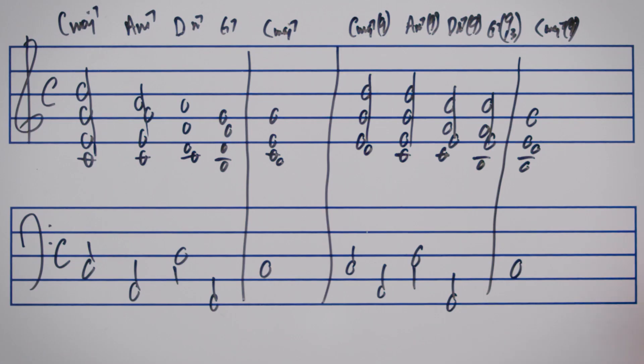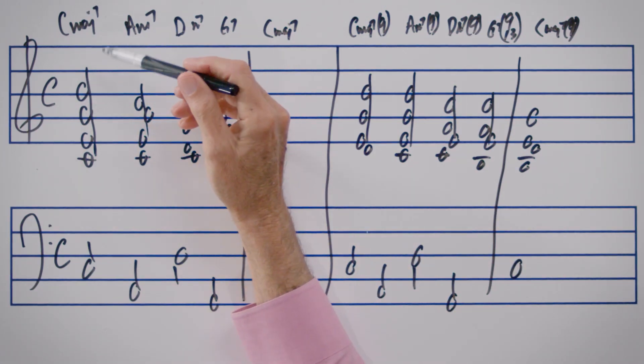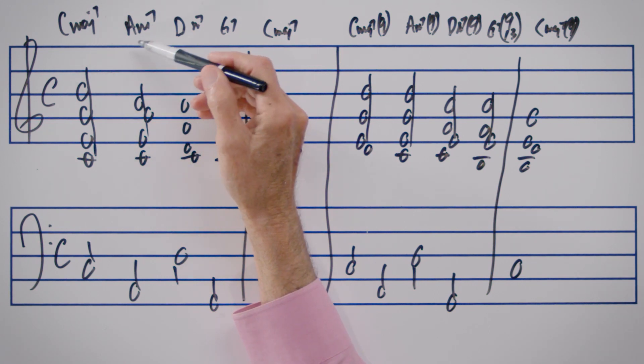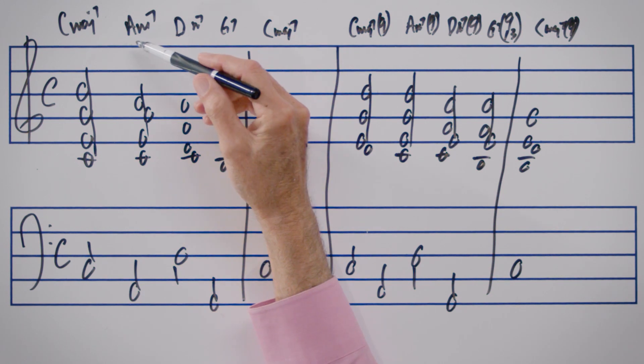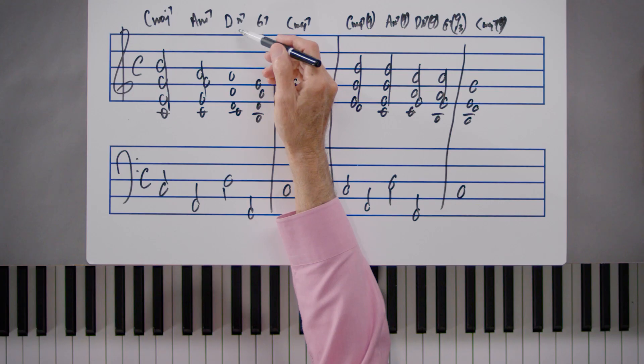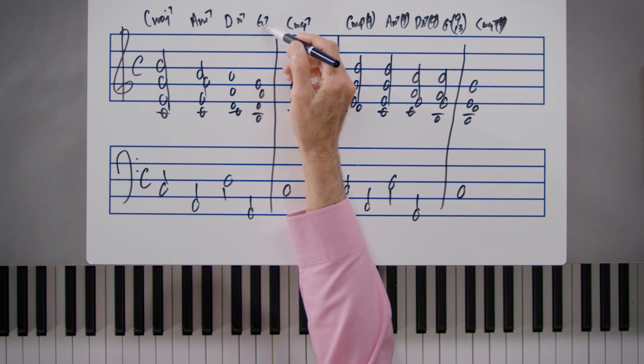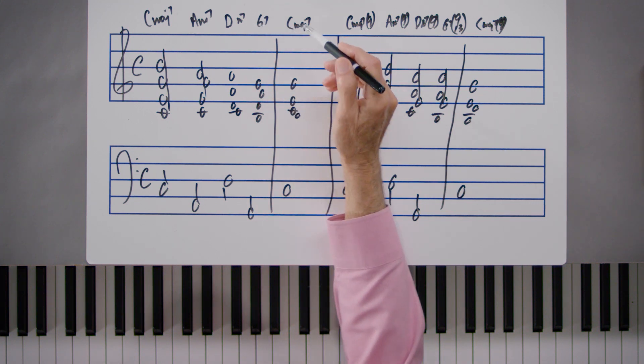The numbers 1-6-2-5 refer to the Roman numeral placement of the chords within a major key. So speaking of the key of C major, the C would be 1, and A minor 7 would be the diatonic chord built on the 6th scale degree. D minor 7 would be the diatonic chord built on the 2nd scale degree. The G7 we've seen before, the V7 on 5, and the C major 7 is 1.